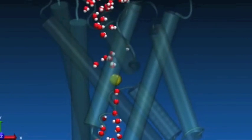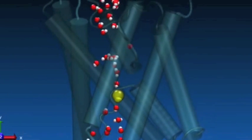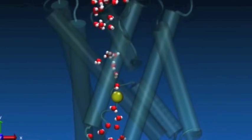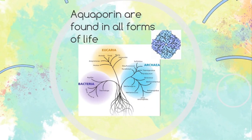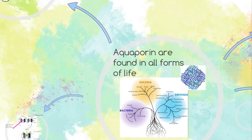Aquaporins are a class of integral membrane proteins that function to facilitate the passive diffusion of water into and out of cells. They are not unique to humans, but rather are found in every class of life. In humans, there are 10 identified classes of aquaporin, AQP0 through AQP9.